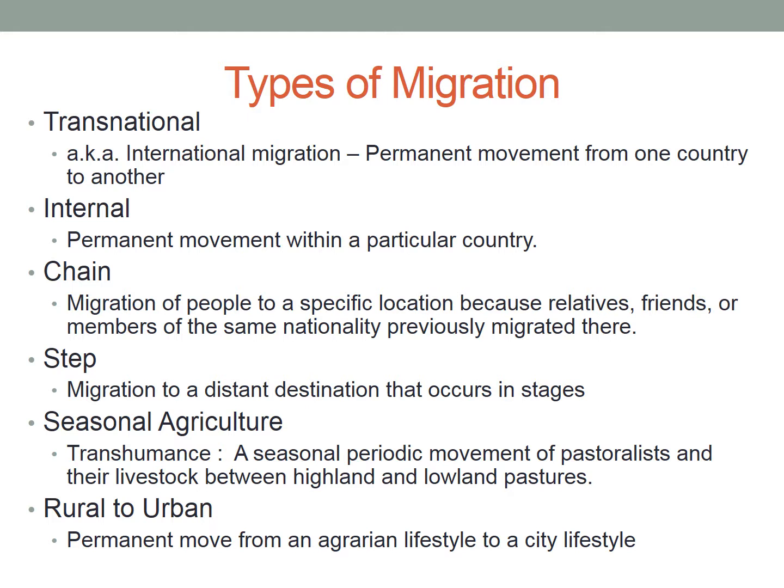Chain migration is the migration of people to a specific location because relatives, friends, or members of the same nationality previously migrated there. I'll give a personal example: part of the reason I live in Las Vegas is because when my parents were deciding where to move — I moved here when I was 8, so I wasn't in the decision-making process — they already had family here. That's chain migration: moving where you know someone. It's not a guarantee of migration, just a pattern.